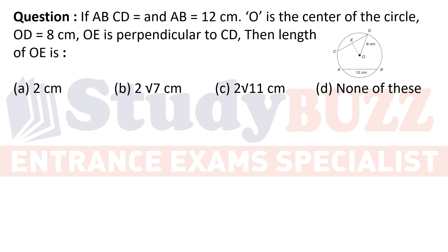These geometry questions are not that difficult — you just need to know the properties for solving a particular question. This question says AB = CD in terms of length, so both AB and CD have length 12 cm.